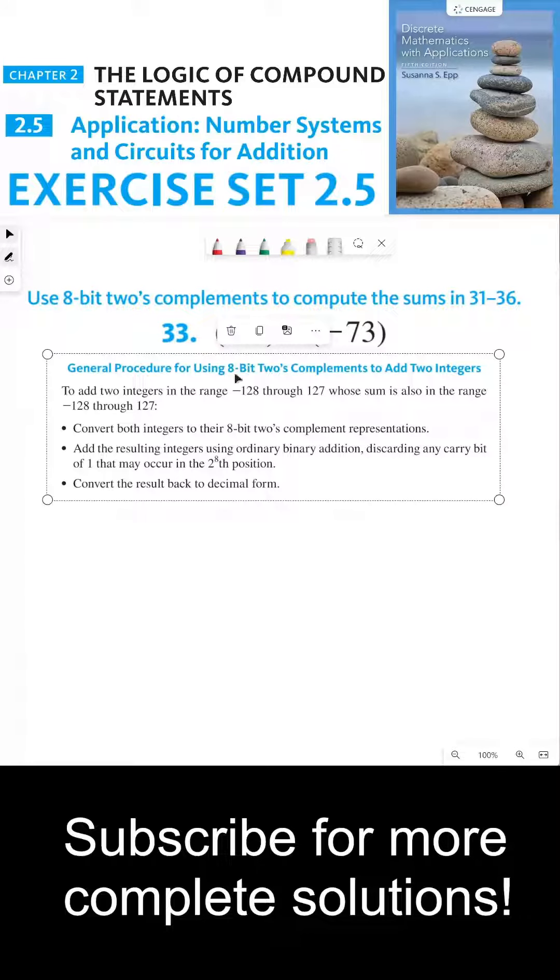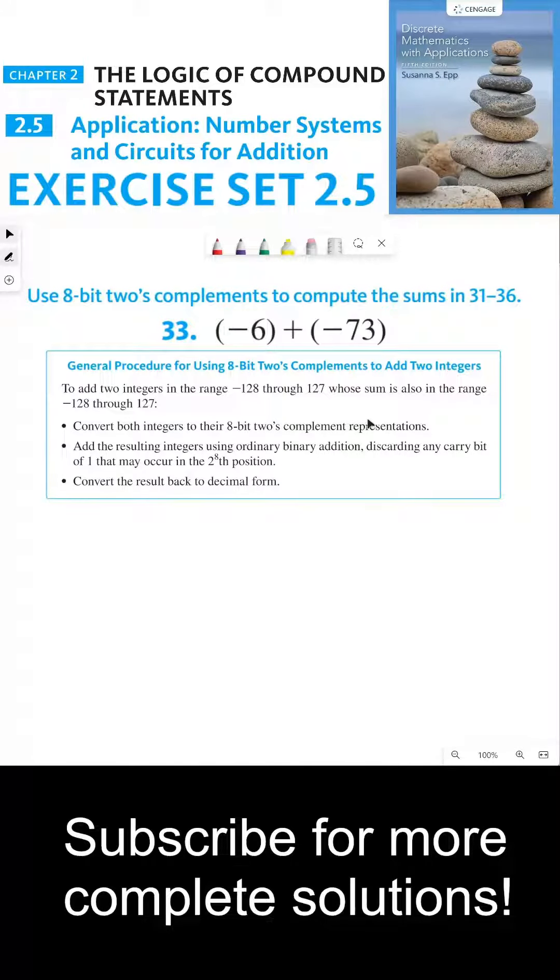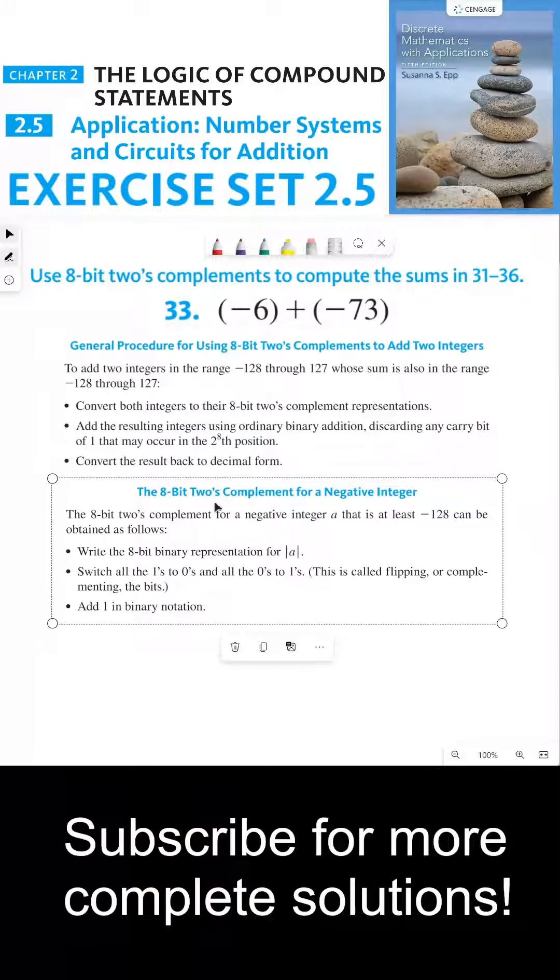Here's the general procedure for using 8-bit 2's complements to add two integers. First, we have to convert both integers to their 8-bit 2's complement representations. Since both of these two integers are negative, we have to use a very special process to find the 8-bit 2's complements for both of these.